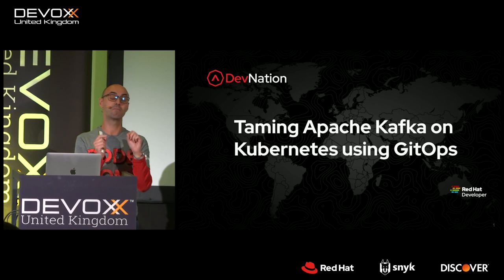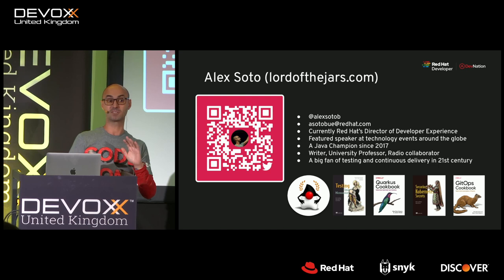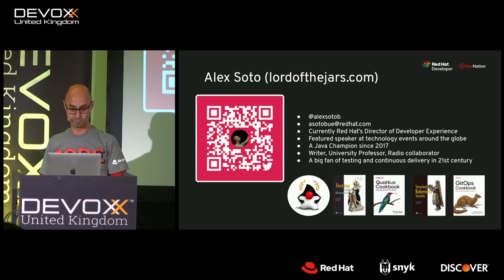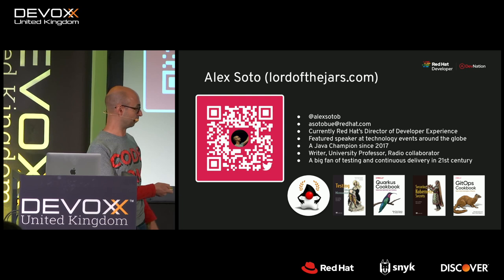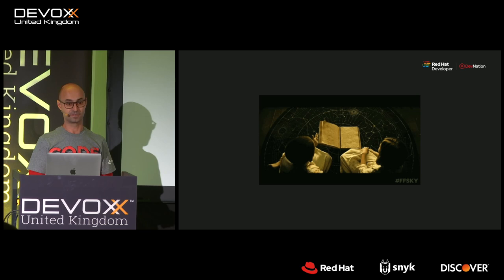My name is Alex Soto. My Twitter is @alexsotob and my email is asoto@redhat.com. If you've got any question, during demo time we will have time, but also you can always ping me on Twitter or email. I'm also the co-author of four books. If you are interested in the GitOps topic, there is the GitOps Cookbook that you can download for free at developers.redhat.com. Let's start with the story.